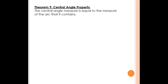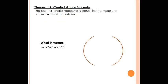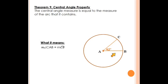It's the idea that the central angle measure is equal to the measure of the arc that it contains. If we get a visual look at it, we would define angle CAB as a central angle because it's an angle that has its vertex at the center of the circle, and then the sides or rays that make up the angle are both radii of the circle. You can see AB is a radius and AC is a radius. So this fits our description of a central angle.